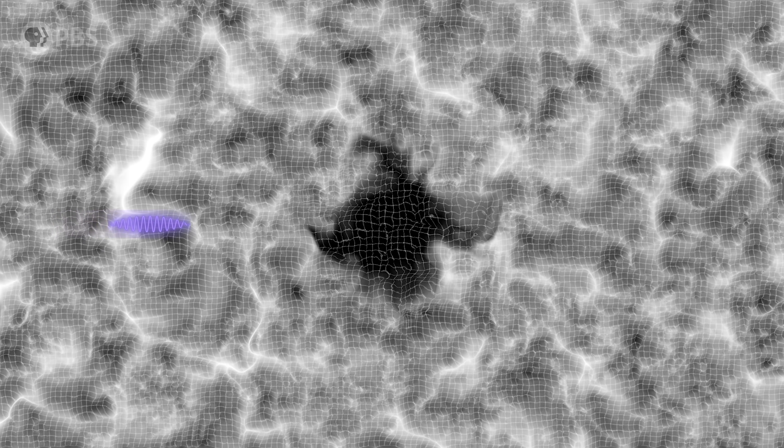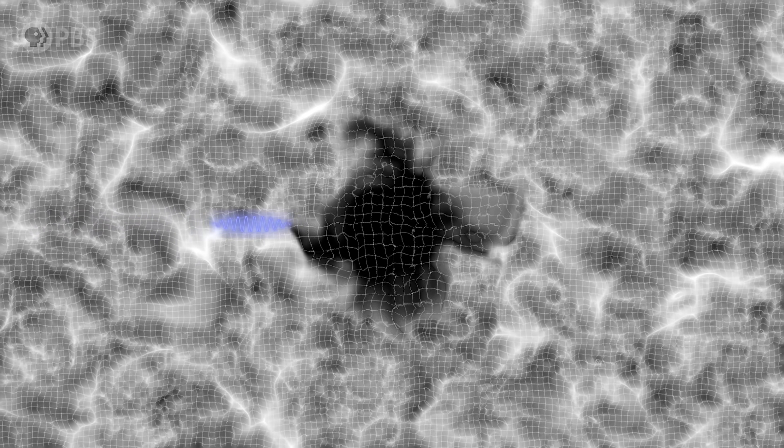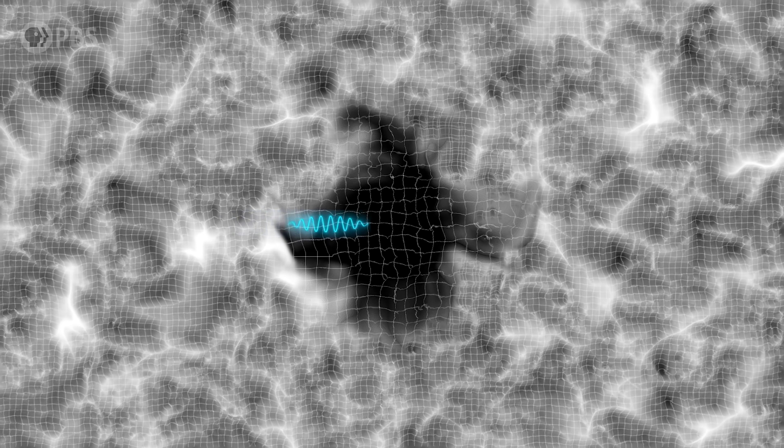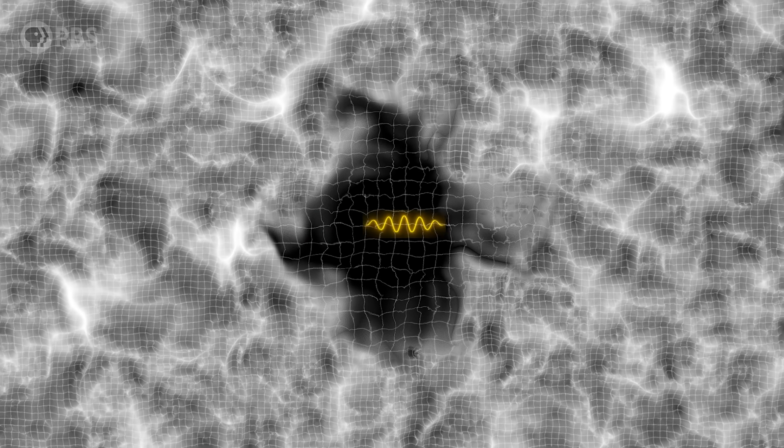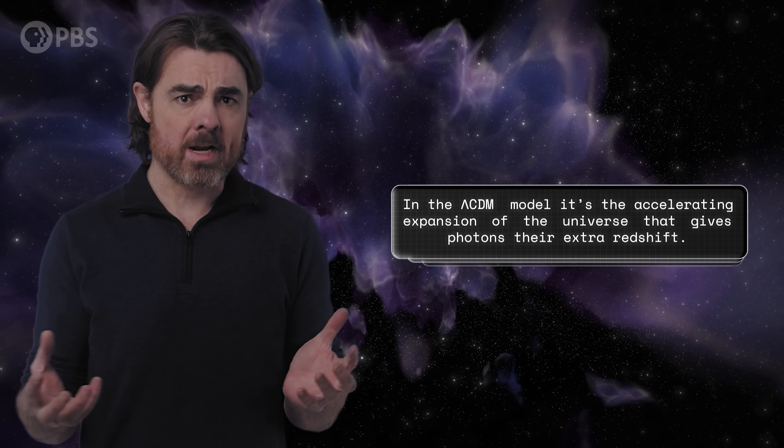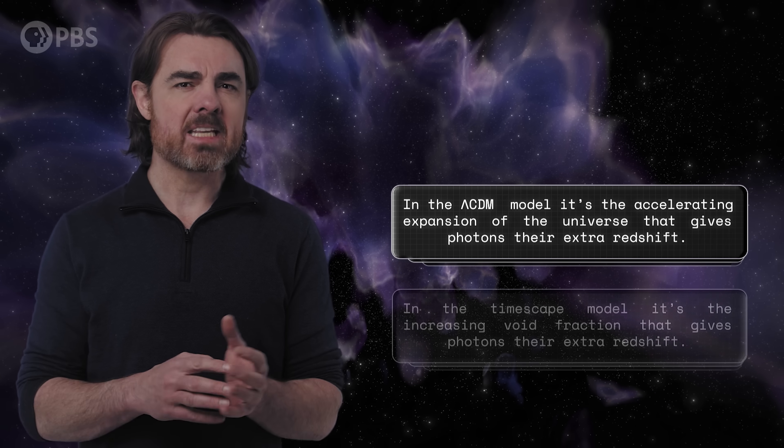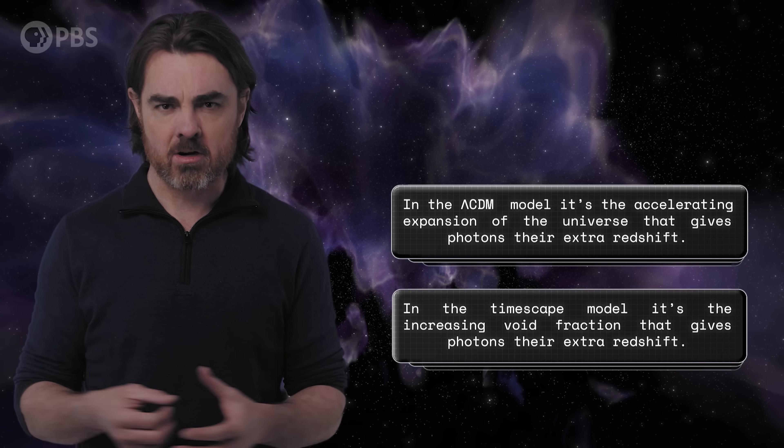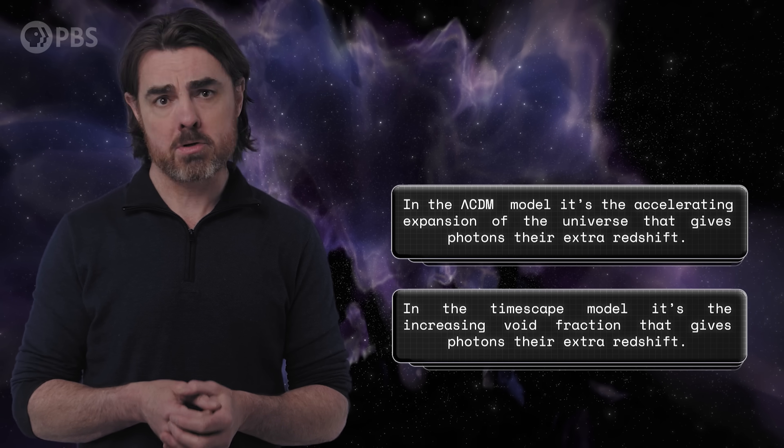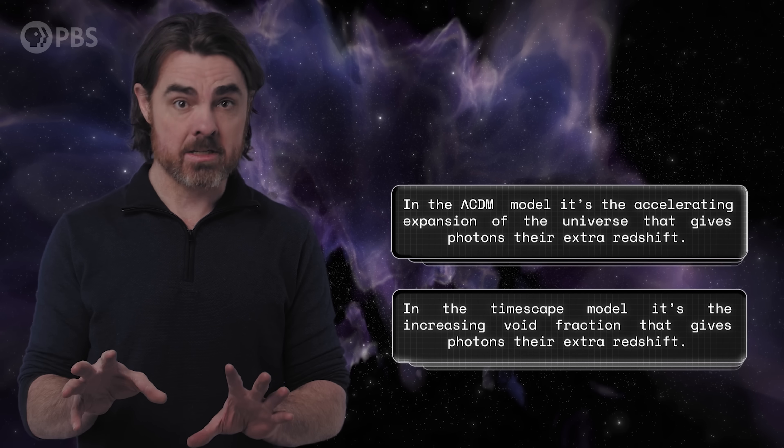This differential expansion has an effect on the photons traveling through these regions. For example, photons are stretched out or redshifted more as they travel through the faster expanding voids compared to dense regions. As matter becomes more and more clumped over time, the fraction of the universe with voids grows. This means that photons traveling through the late universe will spend more time in voids and so pick up more of this extra redshift. In the lambda cdm model, it's the accelerating expansion of the universe that gives photons some extra redshift in later times. But in the timescape model, it's the increasing void fraction in later times that does the same thing. And supposedly, no global acceleration is needed in timescape.